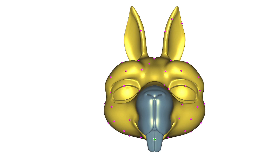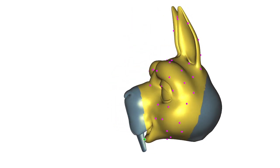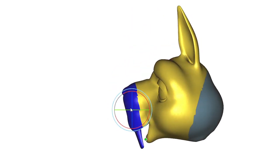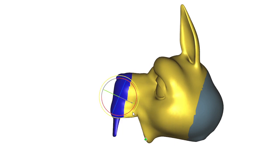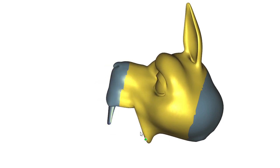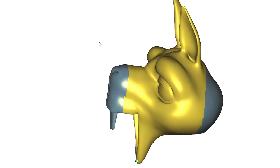We present a method for efficient design of linear subspaces for shape deformation. Our subspaces combine the benefits of generalized barycentric coordinates and linear blend skinning under a unified framework. The main advantages of our method are speed and flexibility.